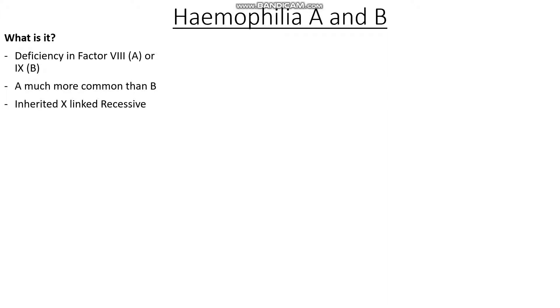A various number of mutations may actually cause haemophilia A and B, but the one we're going to focus on is the flip-tip inversion, which is often seen in severe haemophilia A.